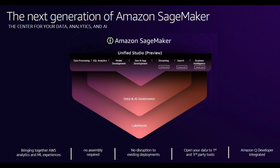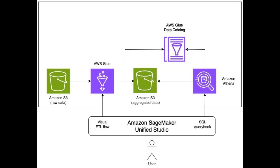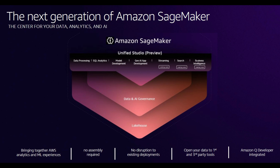Amazon SageMaker Unified Studio is a comprehensive AI development environment provided by AWS. It brings together the functionality and tools from existing AWS Analytics and AI/ML services, including Amazon EMR, AWS Glue, Amazon Athena, Amazon Redshift, Amazon Bedrock, and Amazon SageMaker AI. This unified platform allows you to find, access, and query data and AI assets across your organization.